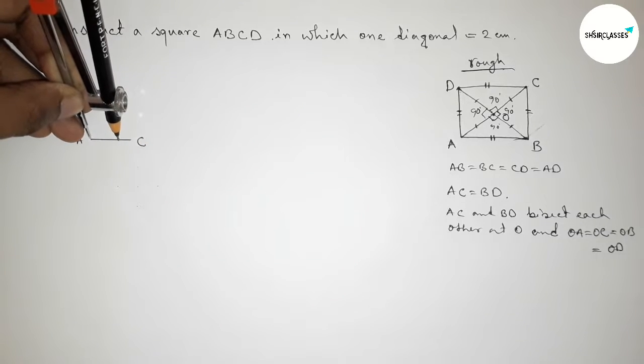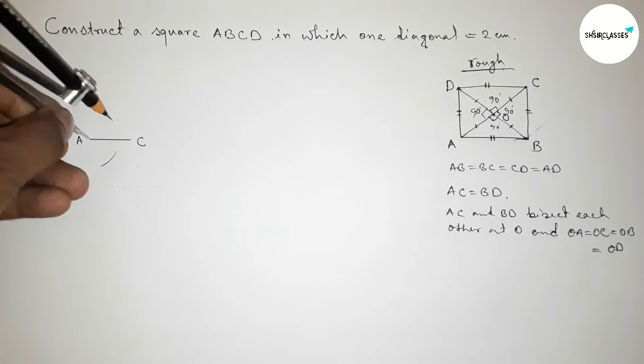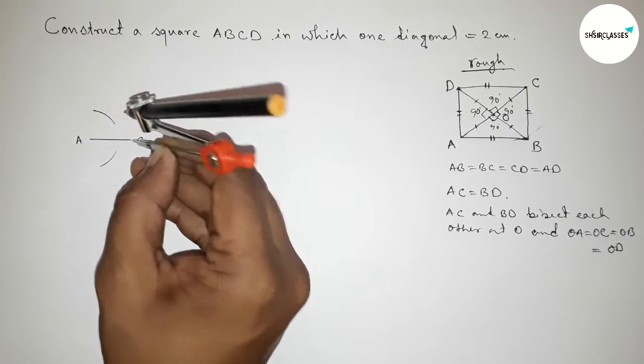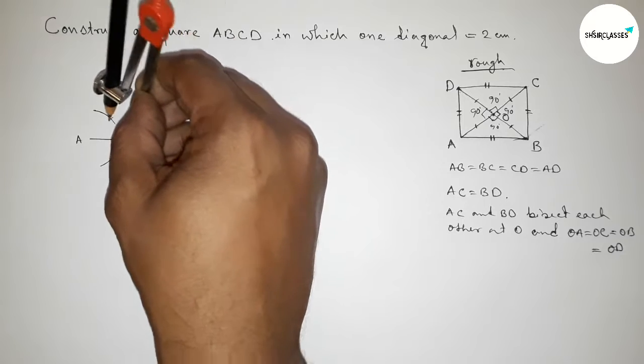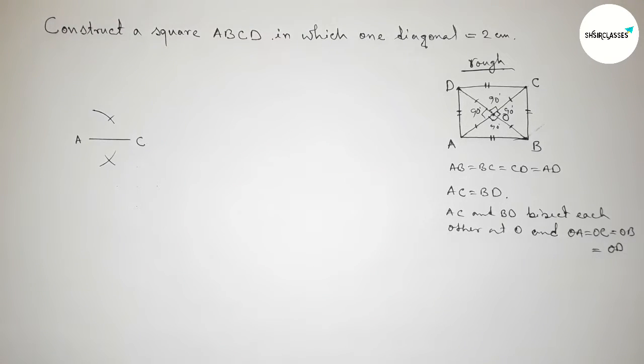Okay, so applying this concept, so first we have to bisect the line AC. So taking greater than half of AC with the help of compass and drawing an arc by this way.